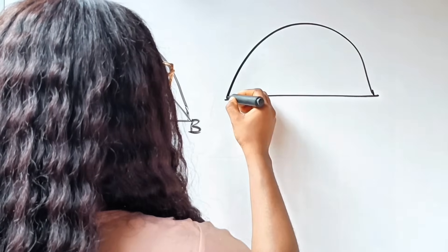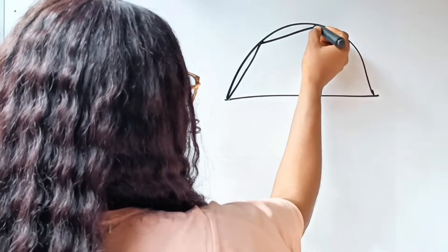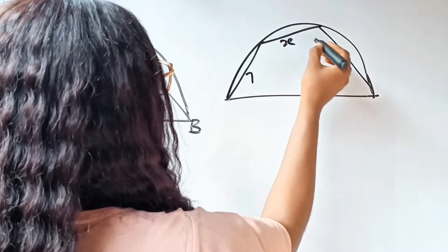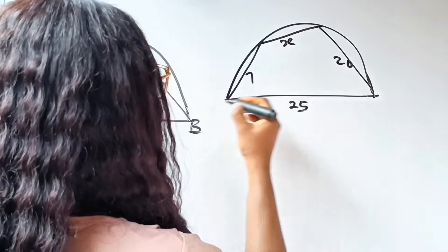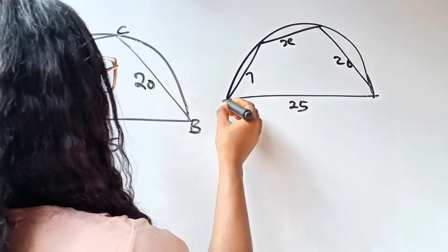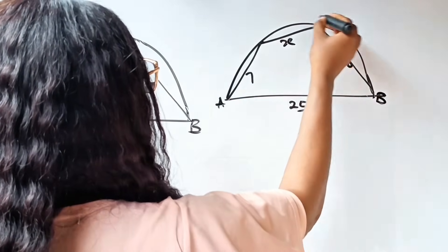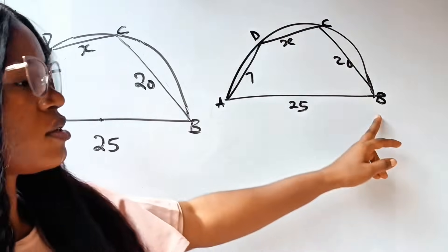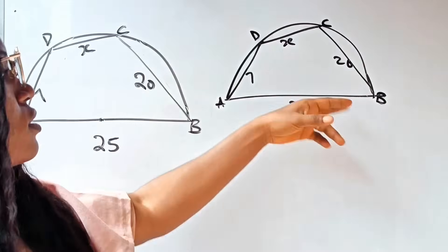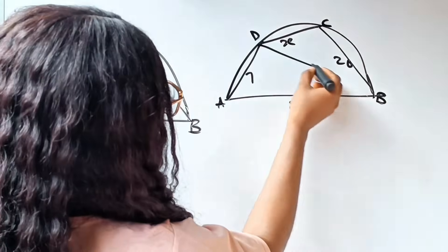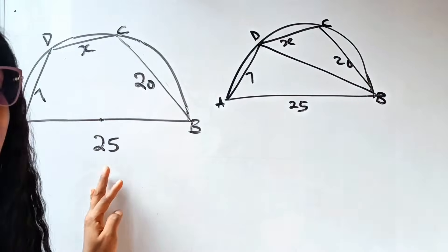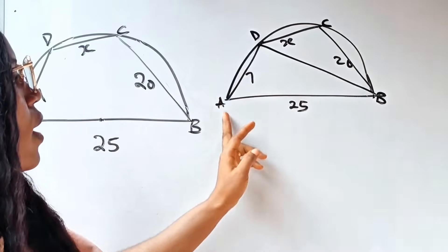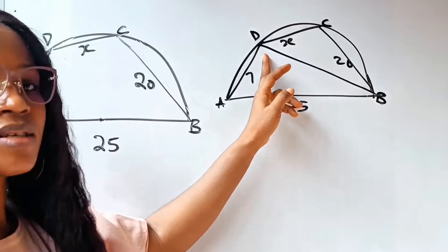So we have the diagram with values: AD is 7, DC is x, CB is 20, and AB is 25, labeling points A, B, C, D. If we join D to B, from the theorem just explained, it simply means that angle ADB is 90 degrees.